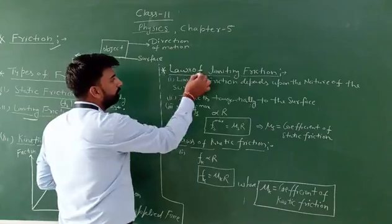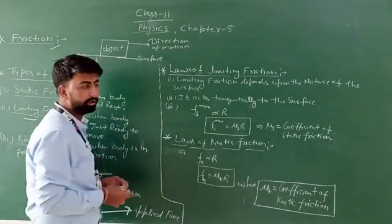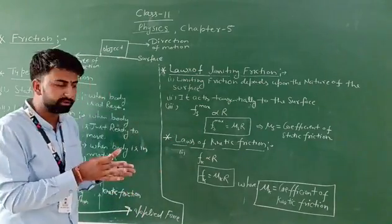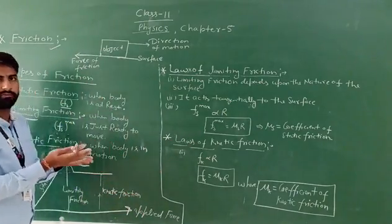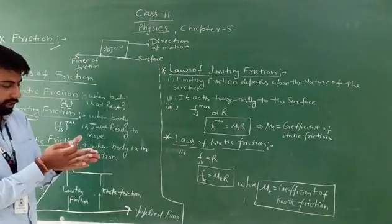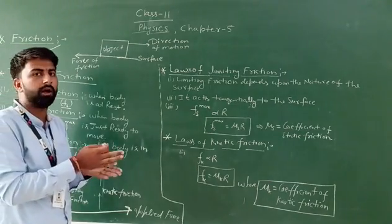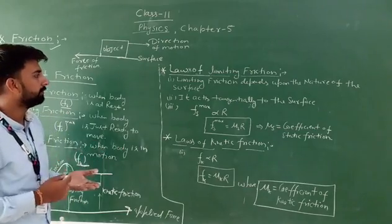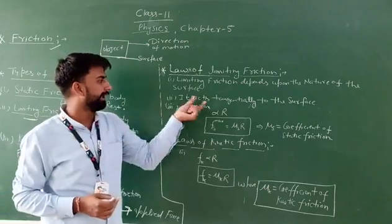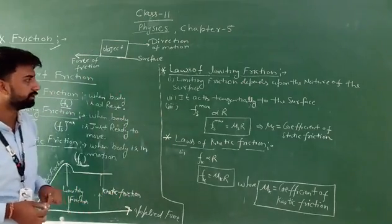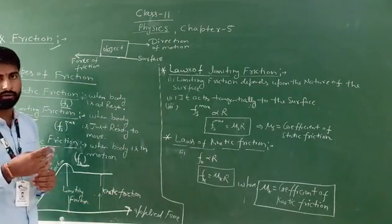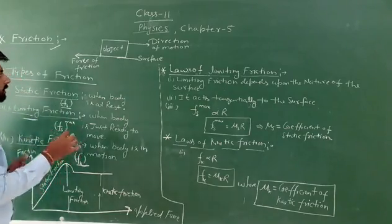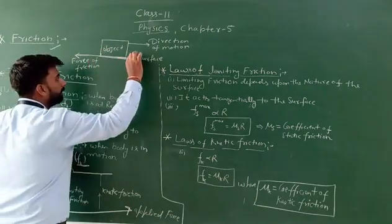Our first law of limiting friction: according to this law, limiting friction depends upon the nature of the surface. If the surfaces are smooth, then the limiting friction value is low. If the surfaces are rough, then the limiting friction value is high.